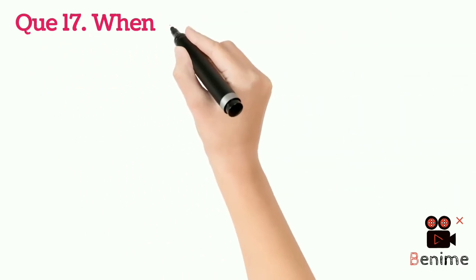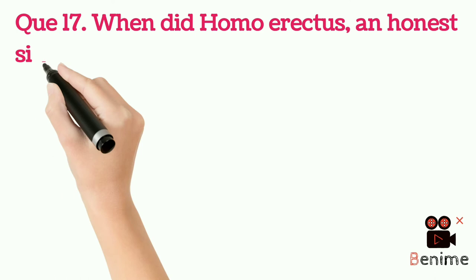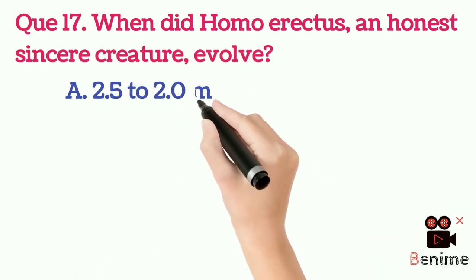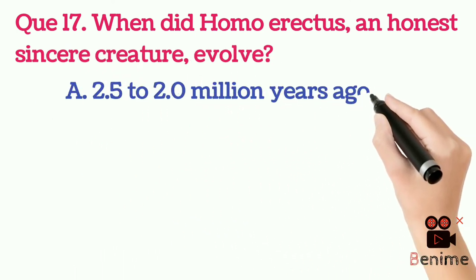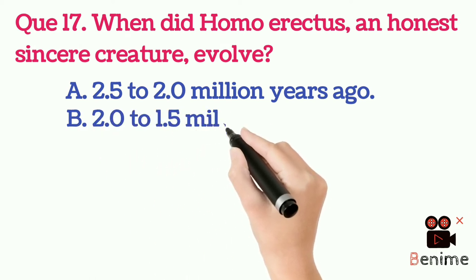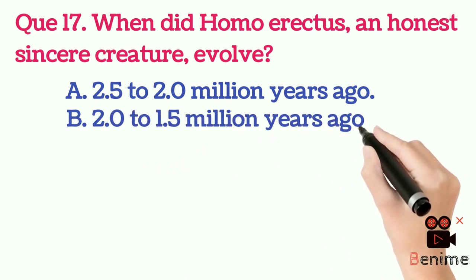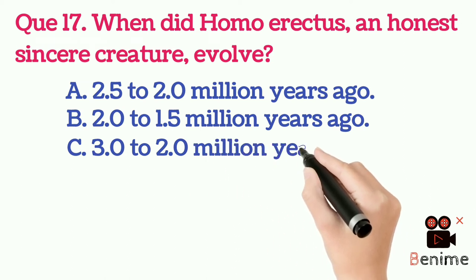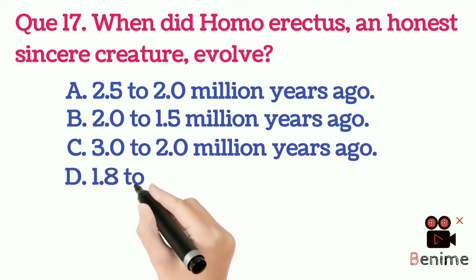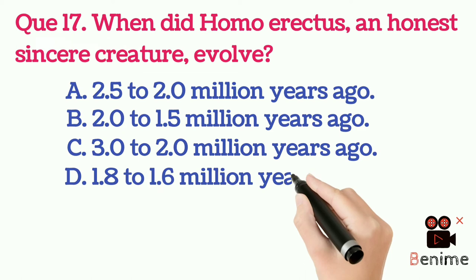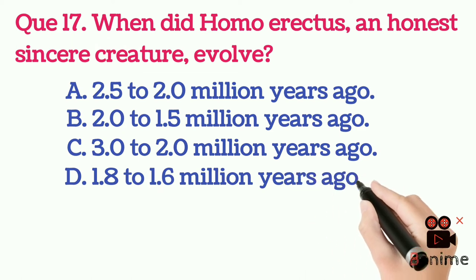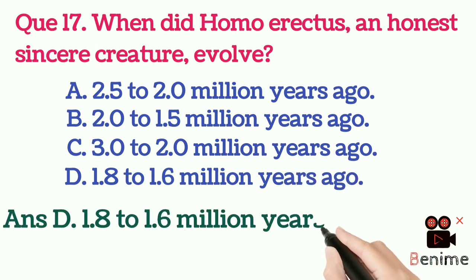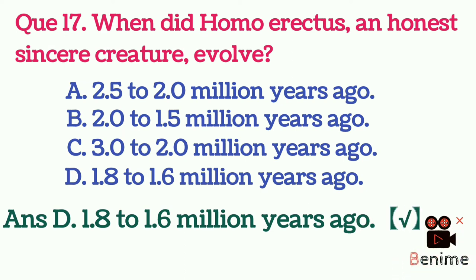Question 17: When did Homo erectus, an upright sincere creature, evolve? A. 2.5 to 2.0 million years ago. B. 2.0 to 1.5 million years ago. C. 3.0 to 2.0 million years ago. D. 1.8 to 1.6 million years ago. Answer D: 1.8 to 1.6 million years ago.